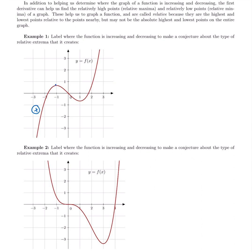Then I see a soft peak. The derivative at every soft peak is zero. Reading left to right again, I'm falling, so this is a negative first derivative. Then I have another soft peak, which means the derivative is zero again. And then reading left to right, it starts rising, so I have a positive first derivative again.